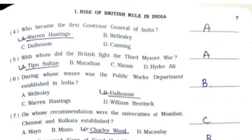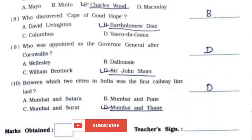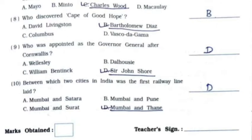Seventh: On whose recommendation were the universities at Mumbai, Chennai and Kolkata established? — Option C, Charles Wood. Eighth: Who discovered the Cape of Good Hope? — Option B, Bartholomew Diaz. Ninth: Who was appointed as Governor General after Cornwallis? — Option D, Sir John Shore. Tenth: Between which two cities was the first railway line laid? — Option D, Mumbai and Thane.